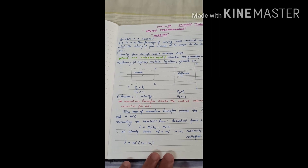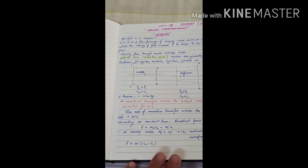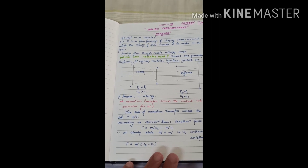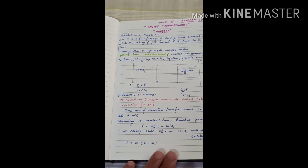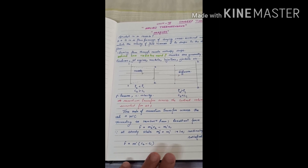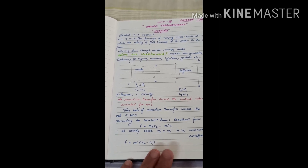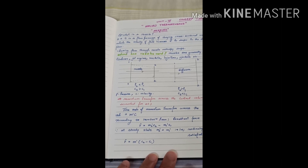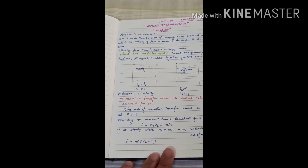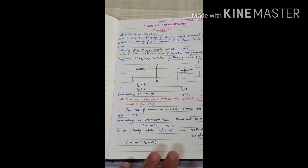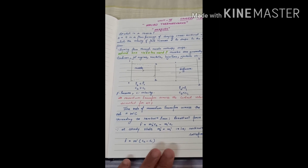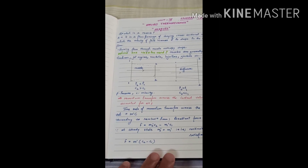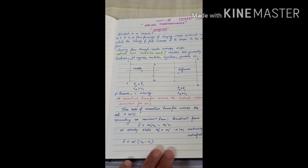There are certain types of nozzles that we will be studying. The first topic in the nozzle chapter of Applied Thermodynamics, unit four, is the flow through convergent and convergent-divergent nozzles, which we will study in subsequent videos.